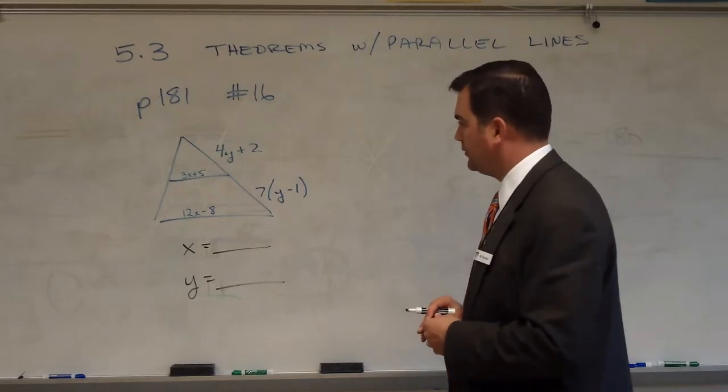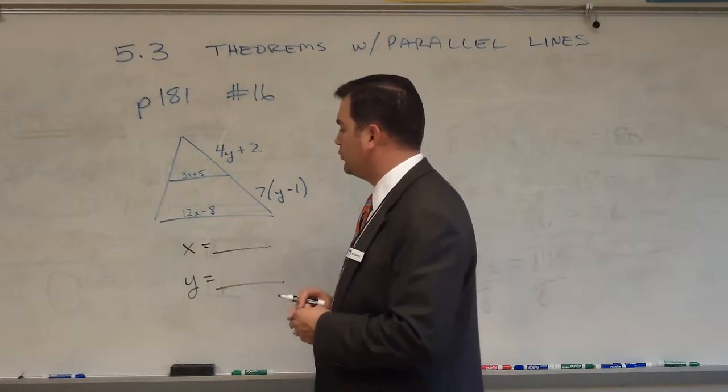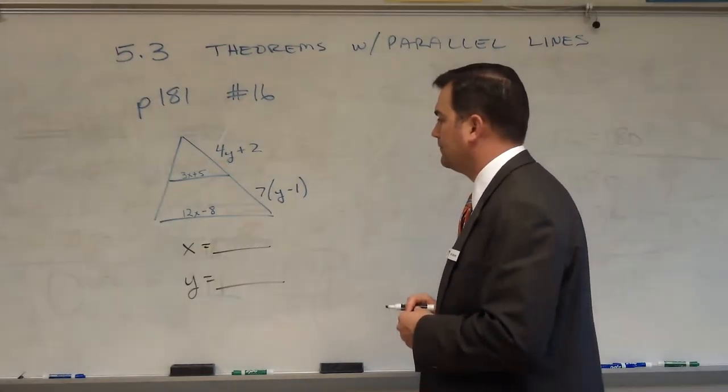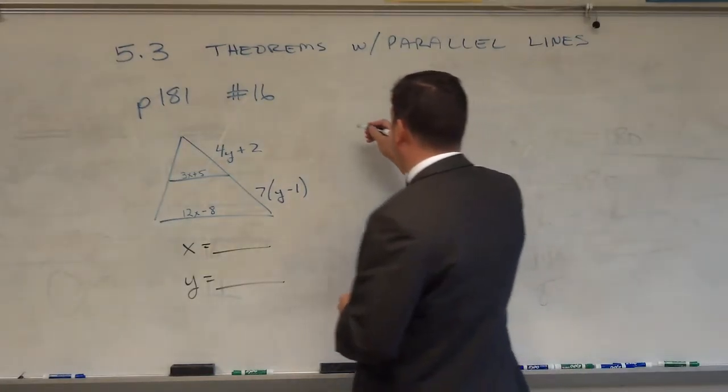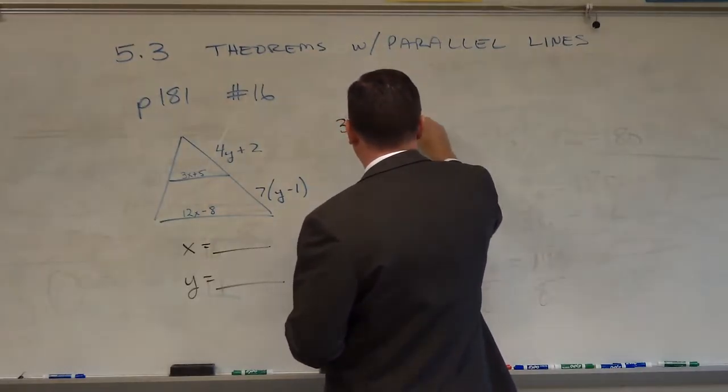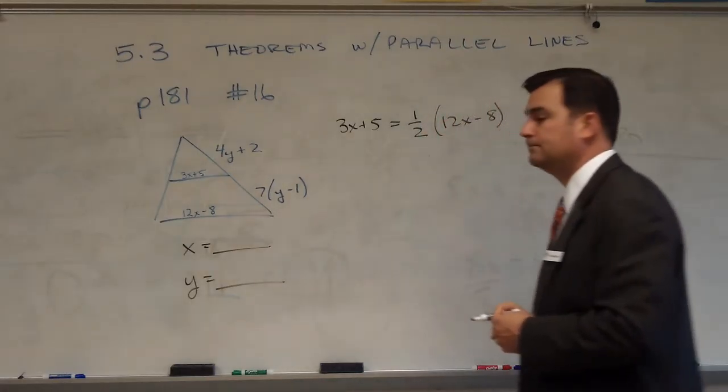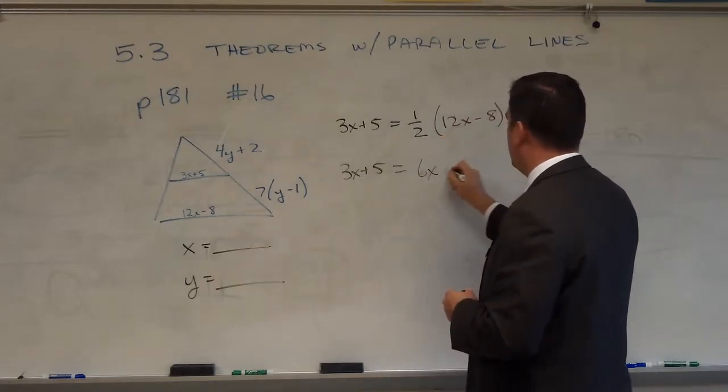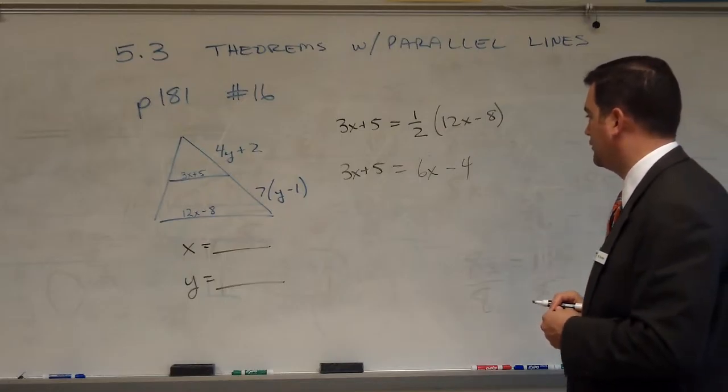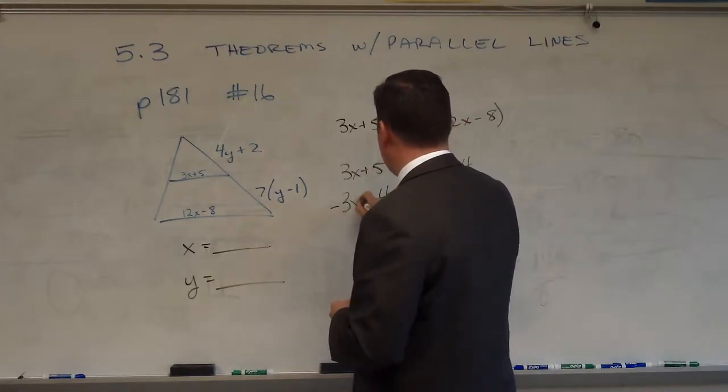Now, I'll solve for x first. If the median segment is 3x plus 5 and the base is 12x minus 8, I know that this median segment will be one half of the base. Therefore, I'm going to set this equation to say that 3x plus 5 will equal one half of the base, which is 12x minus 8. Now I'm going to distribute that one half term. 3x plus 5 will equal, and as I distribute that one half term, one half of 12x is 6x and one half of 8 is 4.